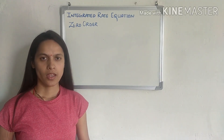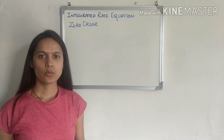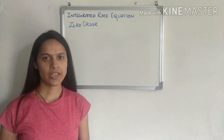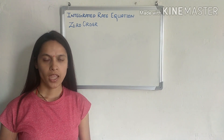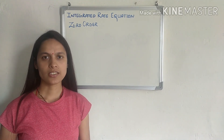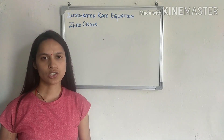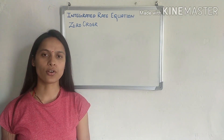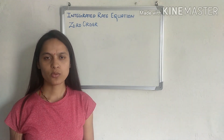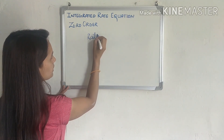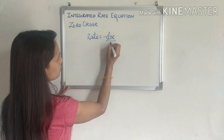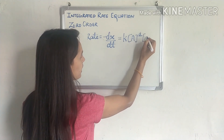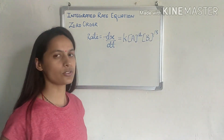Welcome back to my channel. In the very first video of chemical kinetics we studied about the rate of the reaction — that rate of the reaction is the change in concentration of reactant, or decrease in concentration of reactant, with time. In the second video we learned that the rate of the reaction is directly proportional to the molar concentration of the reactant, each term raised to some power which is either equal to the stoichiometric coefficient or not. When we correlate these two equations, we get: rate equals minus dx/dt, which equals k[A]^α [B]^β.